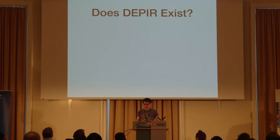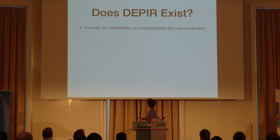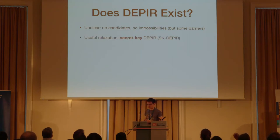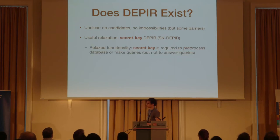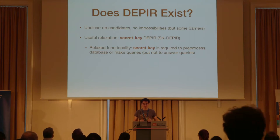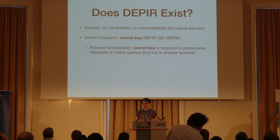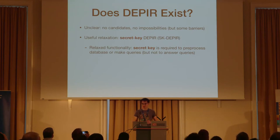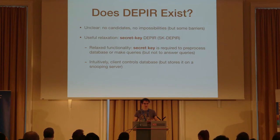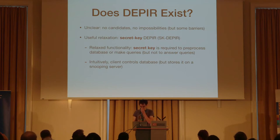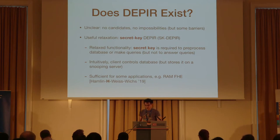So the question is: does doubly efficient private information retrieval exist? I have no idea — I don't have any candidates, and I don't know of any impossibility results. However, there is a useful relaxation, a secret key version of PIR, where you need the secret key to process or query the database, and privacy is guaranteed against an adversary that does not have the secret key. This corresponds to a client storing his own database on some snoopy server, and is sufficient for applications like homomorphic encryption for RAM programs.